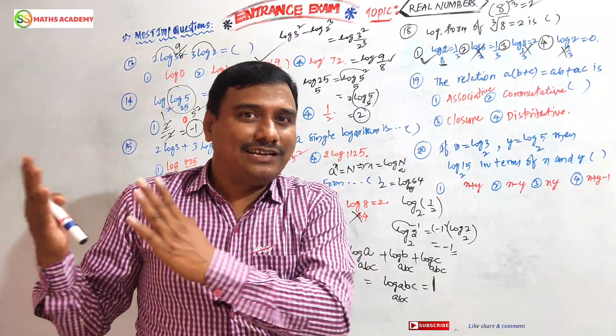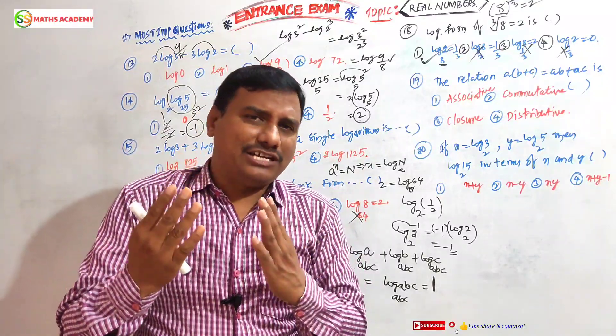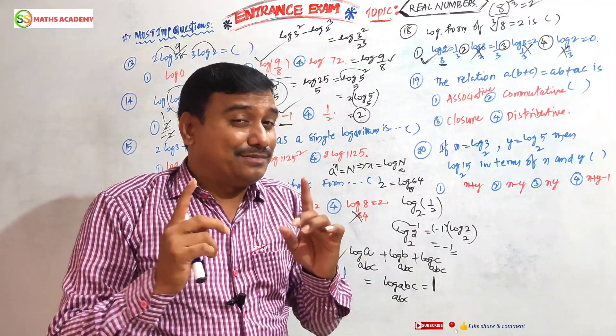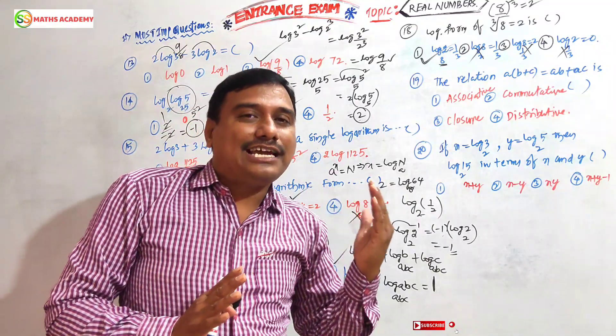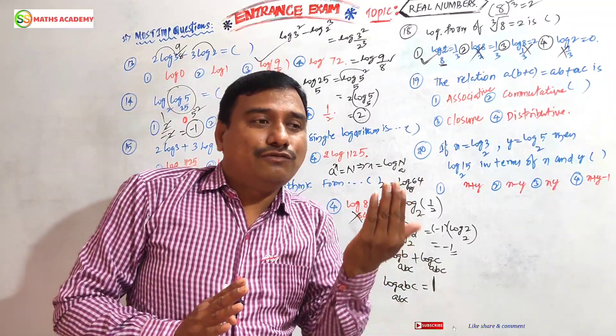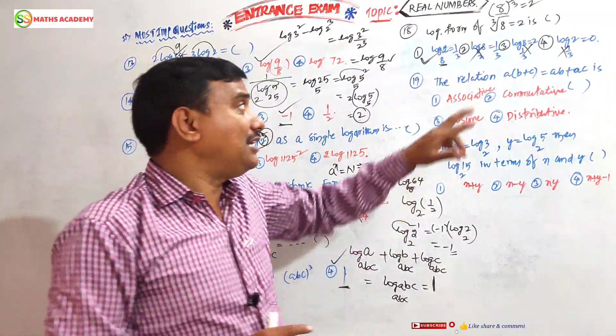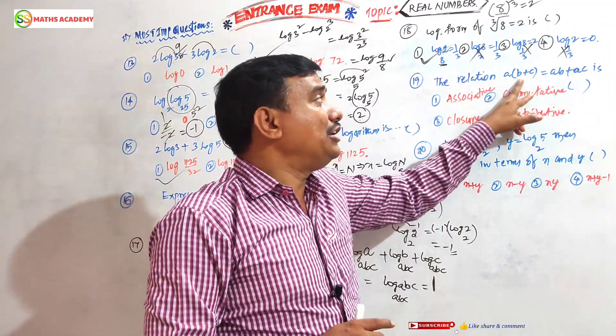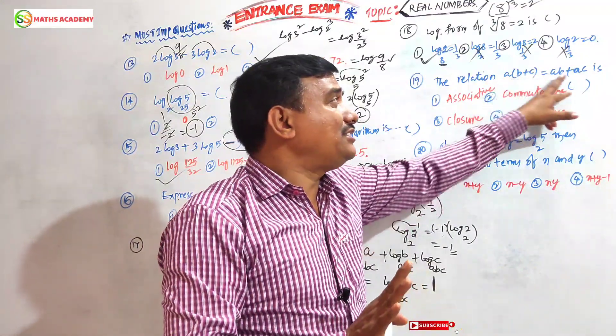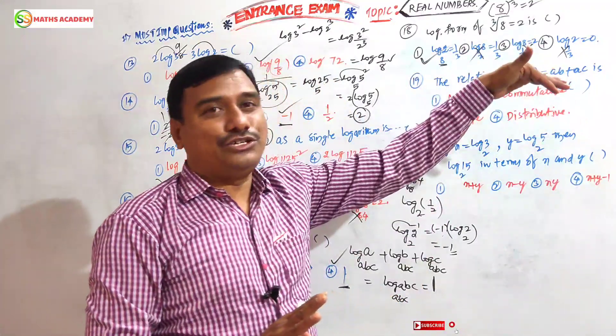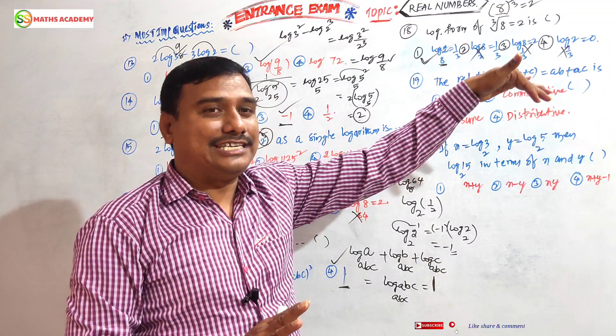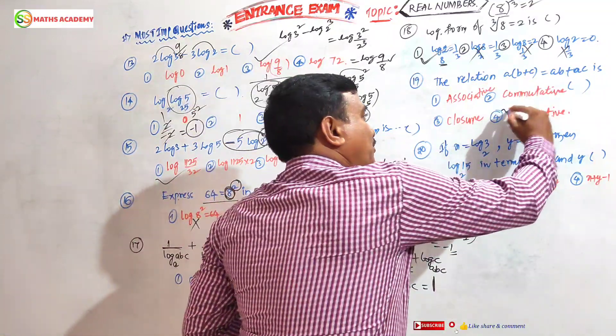Under addition, under multiplication, under division, whatever it is. But distributive means left side we have one value which will be distributed to two values. Here a is distributed two times: a×b gives ab, a×c gives ac. So a is distributed with b plus c.